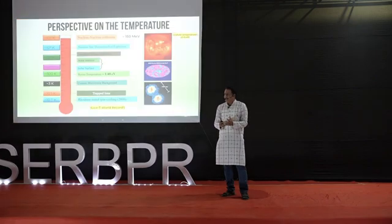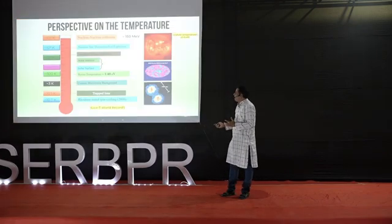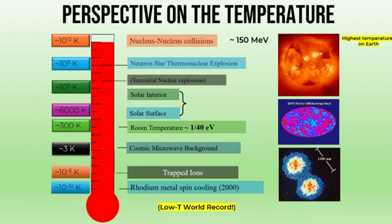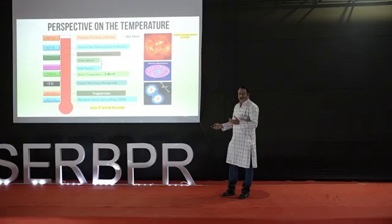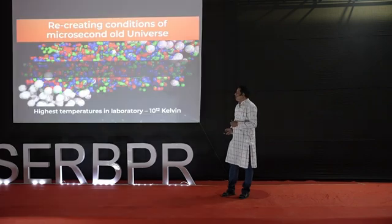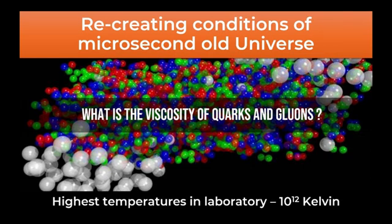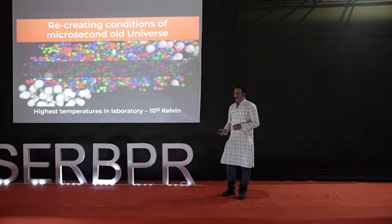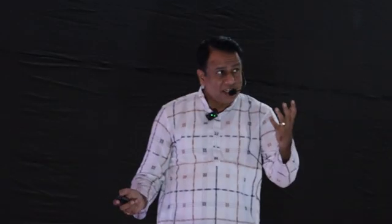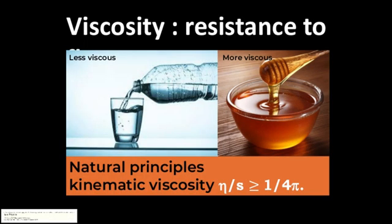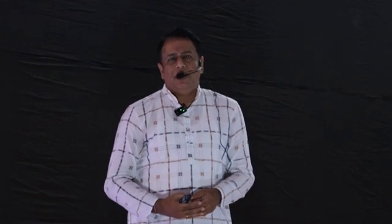Now that we have recreated a microsecond-old universe in the laboratory and reached the conditions favorable to study the properties of quarks and gluons, we go forward and measure them. One of the properties I will discuss today is viscosity. Viscosity of quarks and gluons is what we are going to measure. Viscosity is simply resistance to flow. Take water and honey — water flows more smoothly than honey because water has less viscosity compared to honey.